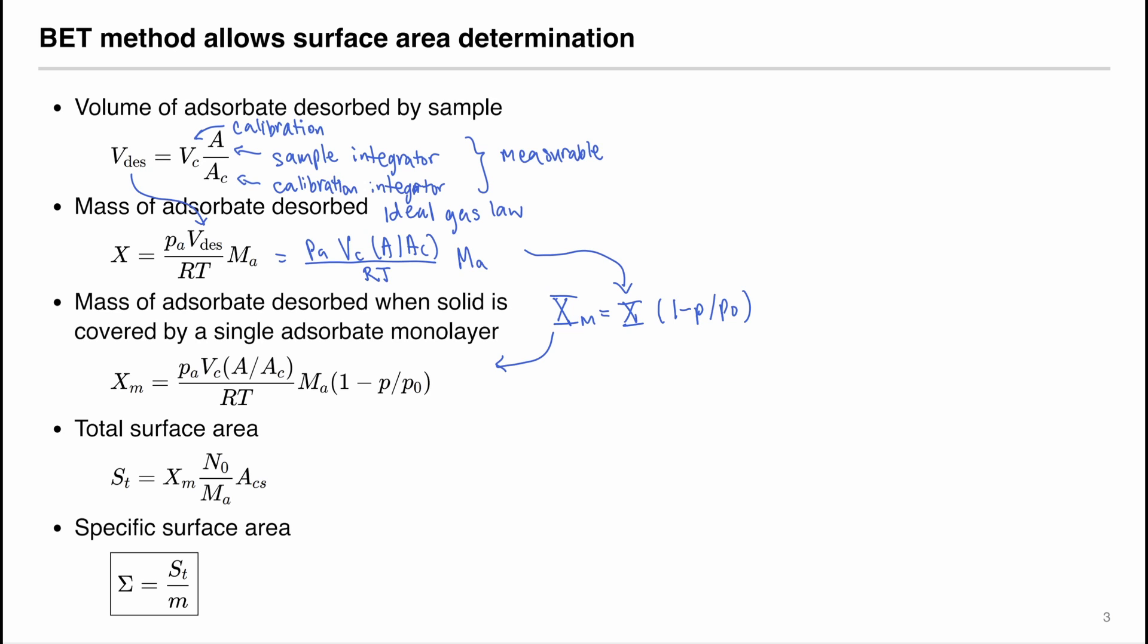And then calculate the total surface area of the solid by using the cross-sectional area of the adsorbate molecule. And on the left, we have the amount number of molecules, where n zero is the Avogadro's number. To calculate the specific surface area, we divide the total surface area with the mass of the sample.